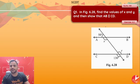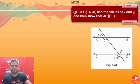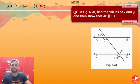The first question says: in this figure, find the value of x and y, and then show that AB is parallel to CD. I can clearly see that x and 50 degrees are forming a linear pair, so x plus 50 degrees is equal to 180 degrees because it is a linear pair. From here, x is equal to 130 degrees.